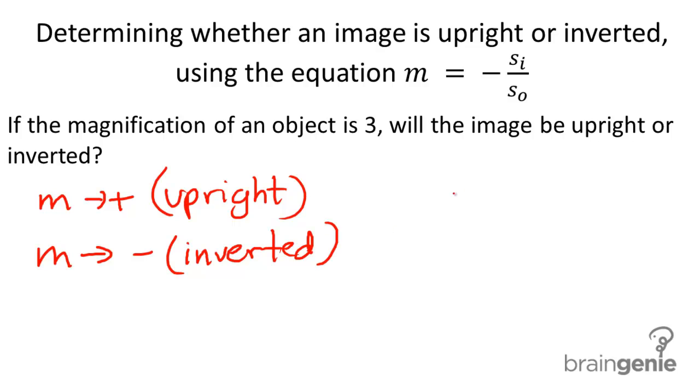Now, since m equals 3 — positive 3 — that means that the image is upright.